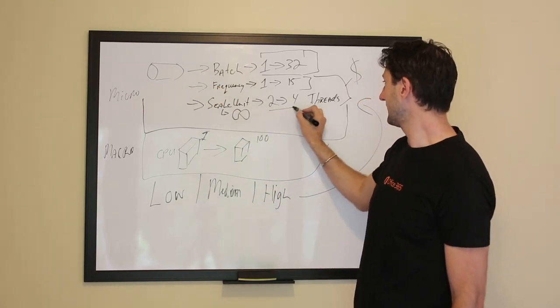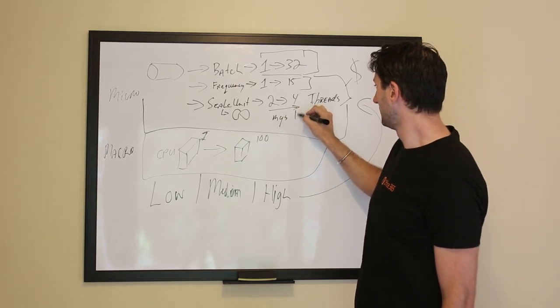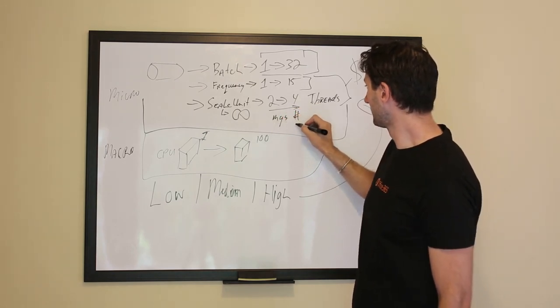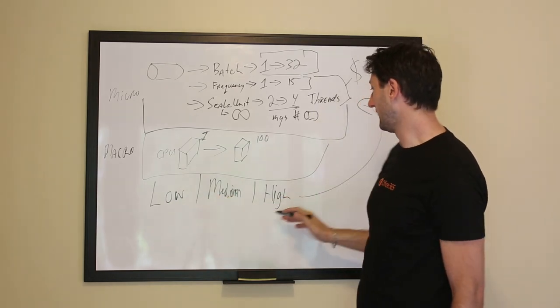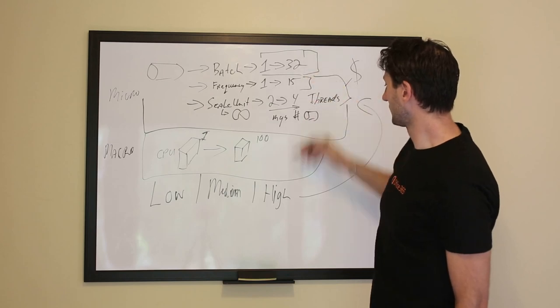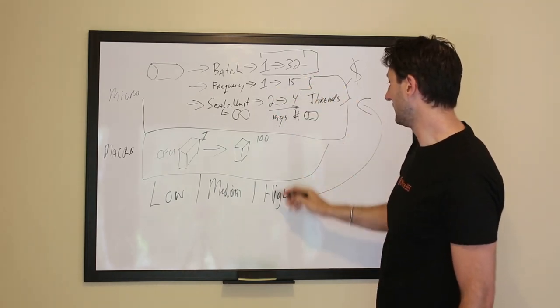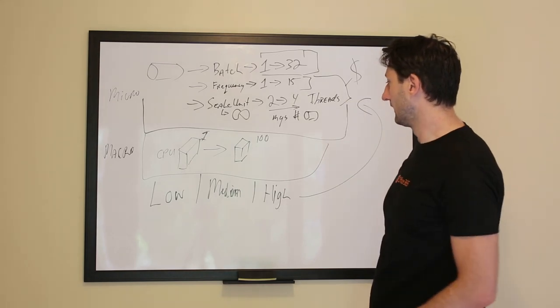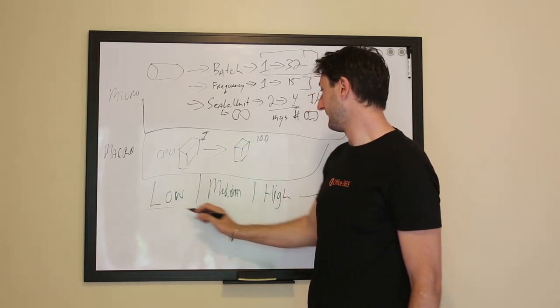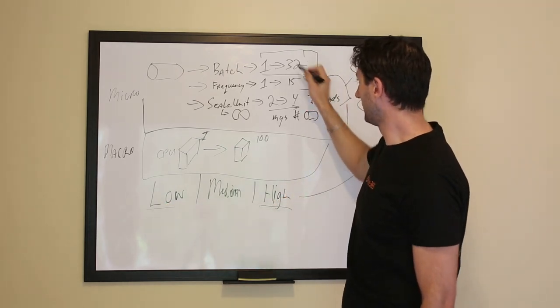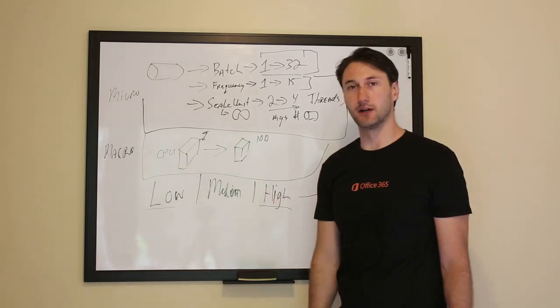And again, this scales up based on the messages, the message count in the queue. And then on the high, this maps much more closely to this, where you'd have the one second to maybe ten seconds, and then you'd have multiple threads running that queue dequeue rate. So it makes it super easy to implement all of this dynamic. You just have to choose the tier that you're interested in.